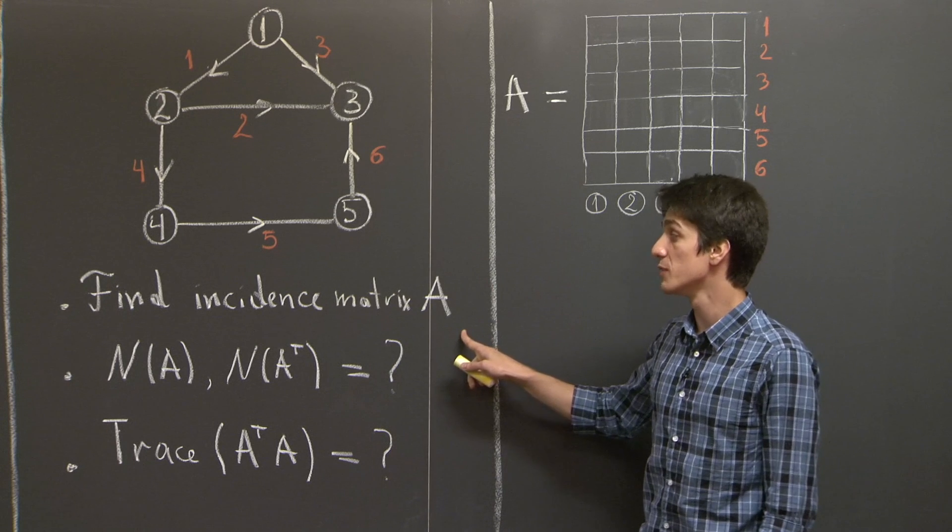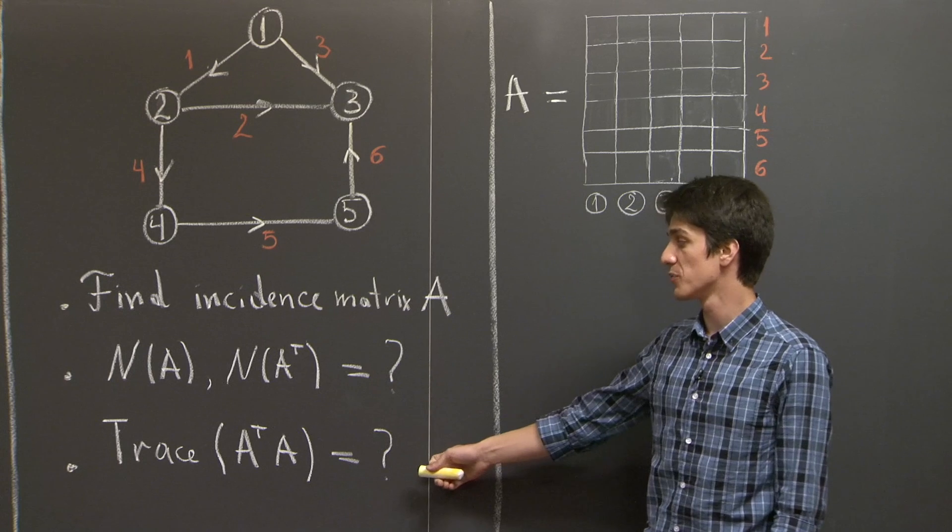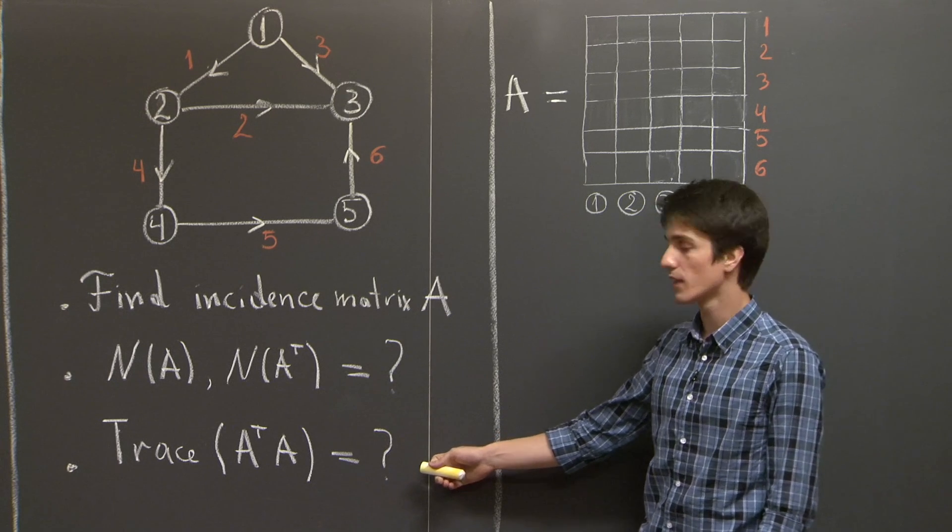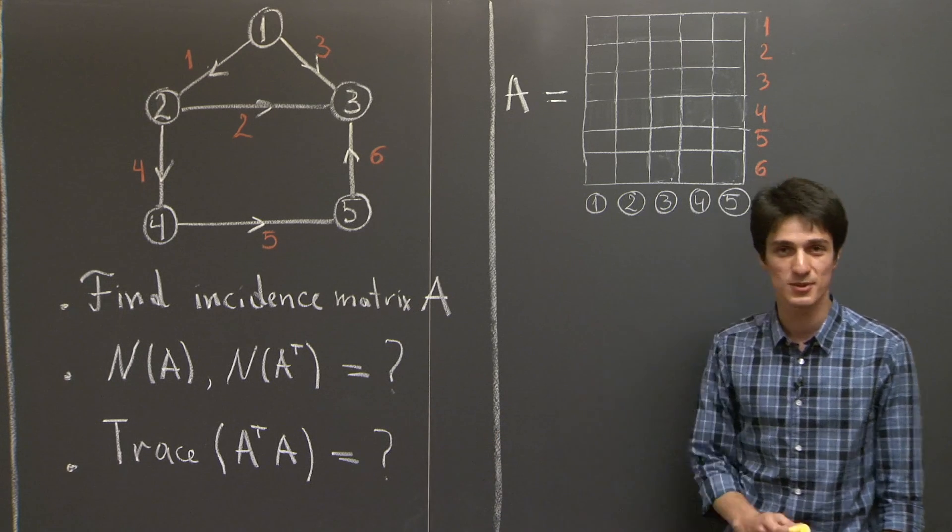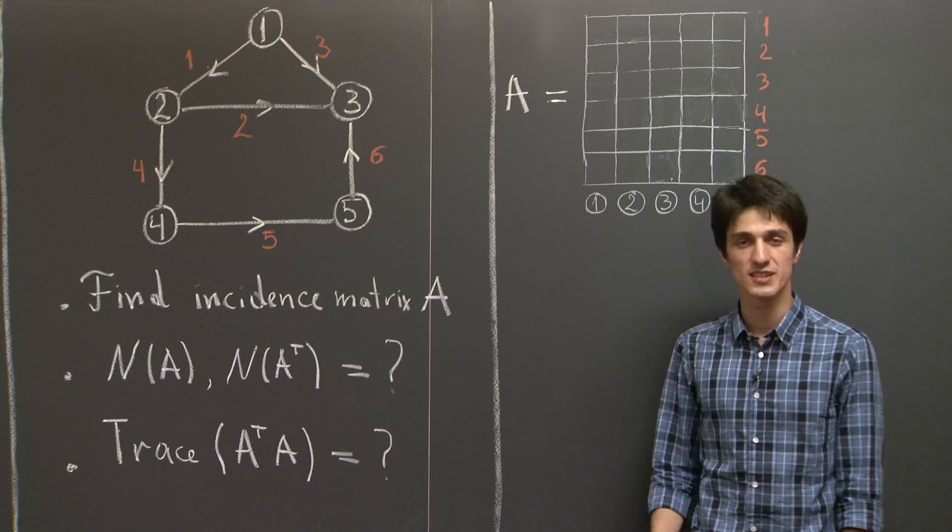And we are asked to write down the incidence matrix A, and then to compute its kernel and the kernel of A transpose. And finally, we're asked to compute the trace of A transpose A. I'll give you a few moments to try the problem on your own, and then you'll see my take on it.